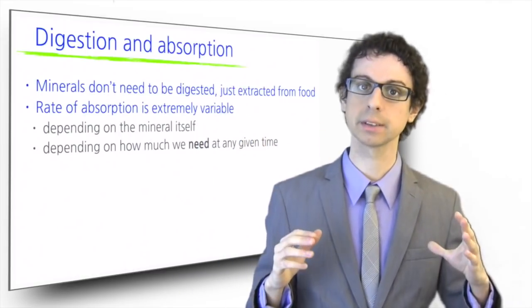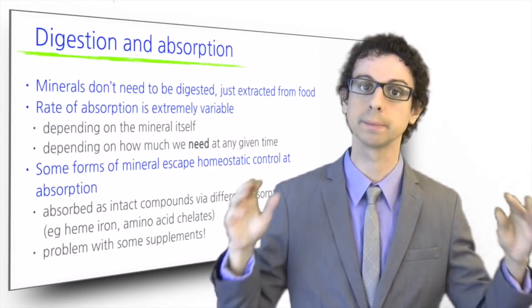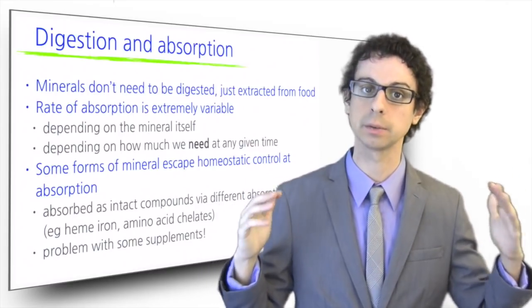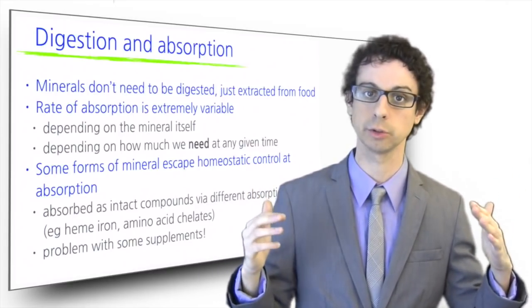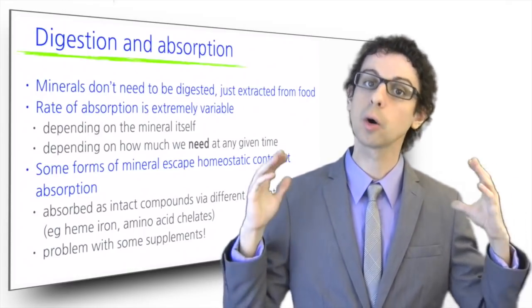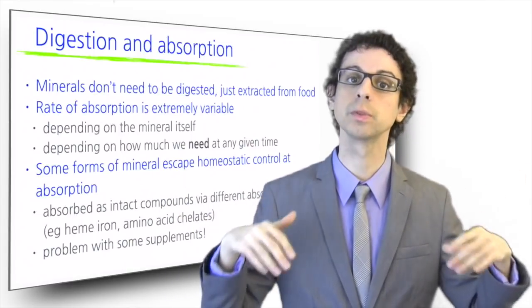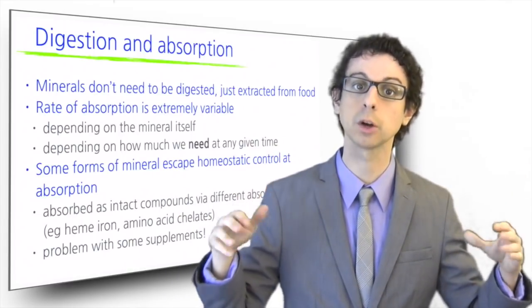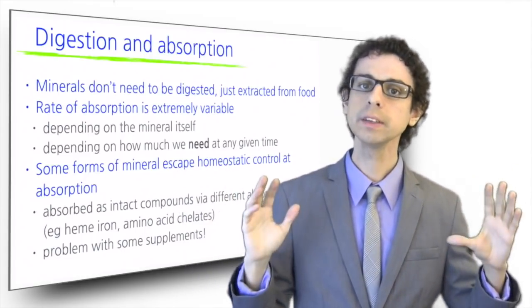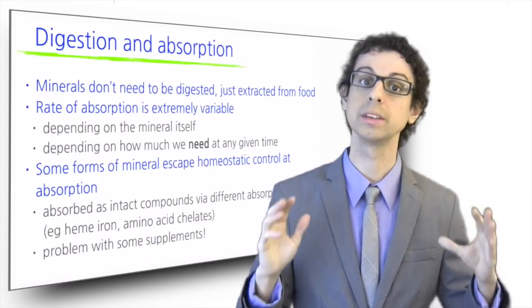Some dietary forms of minerals, however, escape such mechanism of homeostatic control at the absorptive level because they are absorbed as intact compounds via different routes of absorption. This is the case, for example, of heme iron or many amino acid chelates of minerals, which are absorbed following the same absorption route of the amino acids, not the one of minerals. Although this is less of a problem with food, we have to be very careful with supplements.